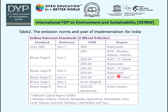Bharat Stage 2 was implemented for 13 cities including Mumbai, Kolkata, Chennai, Bengaluru, Hyderabad, Ahmedabad, Pune, Surat, Kanpur, Lucknow, Solapur, and Januswathpur in 2003, and then implemented nationwide in 2005.